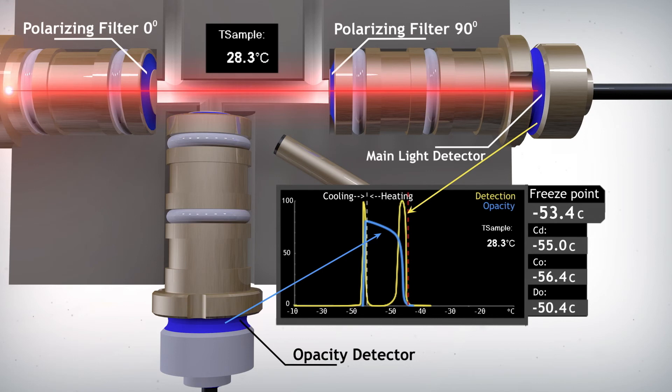Larger crystals are detected by the secondary, or opacity detector, and are usually at a slightly colder temperature, shown as CO for crystal opacity. The last of the larger crystals that melts is shown as DO. The temperature at which the last fine crystal melts determines the freezing point. The temperature difference between DO and freezing point is usually small.